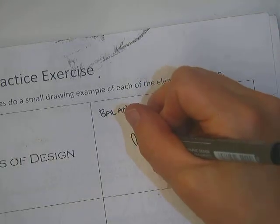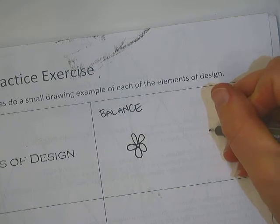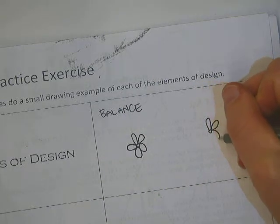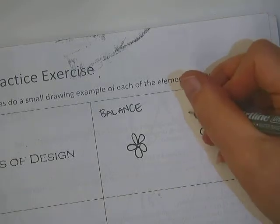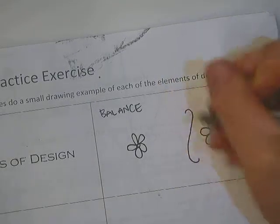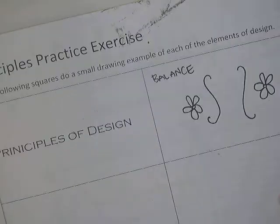So I can do something symmetrically balanced. Like if I draw a flower over here and a flower equally balanced on the other side, you know, it's totally up to you what you're going to do. Yeah, I'm just kind of making this up as we go.